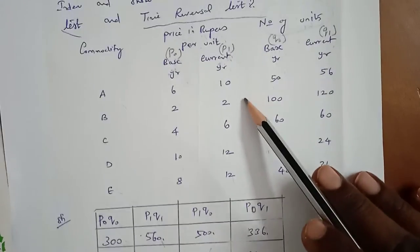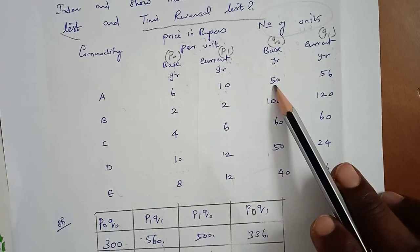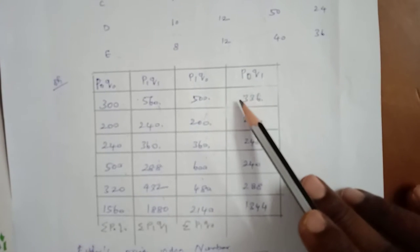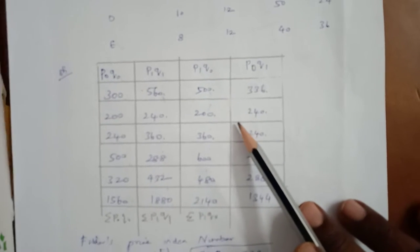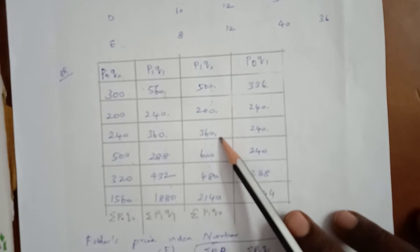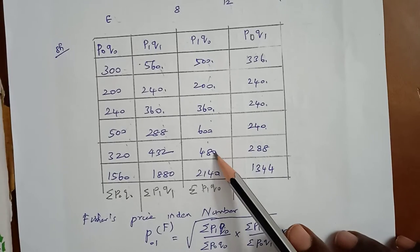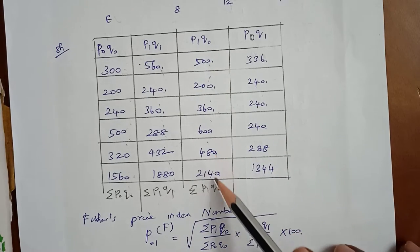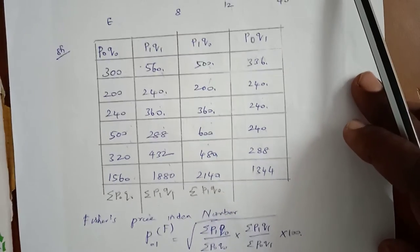Next, multiply P1 into Q0. 10 × 50 = 500; similarly 200, 360, 600, and 480. Adding all values, sigma P1Q0 = 2140.